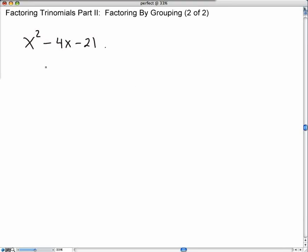What we're going to do is we're going to factor this trinomial using the factoring by grouping method. The first thing we should notice is that there's a 1 in front of the x squared. I'm going to write it over here on the side. That's our first step.